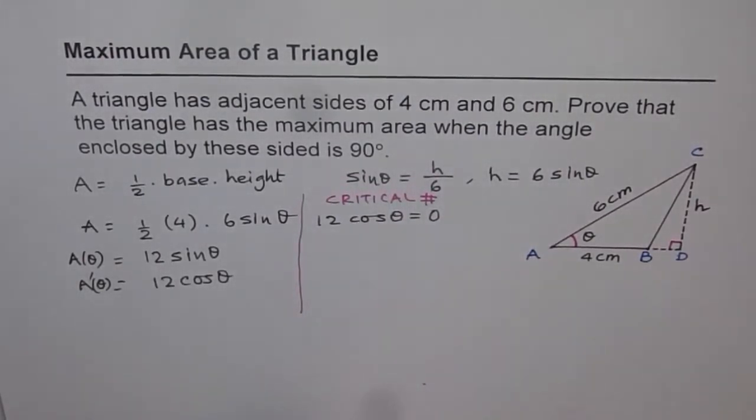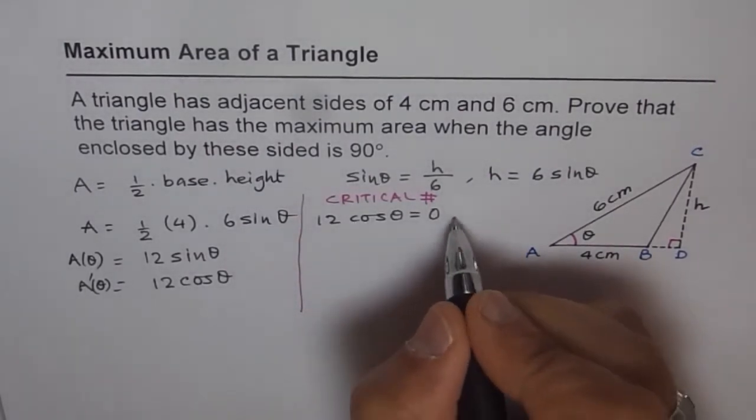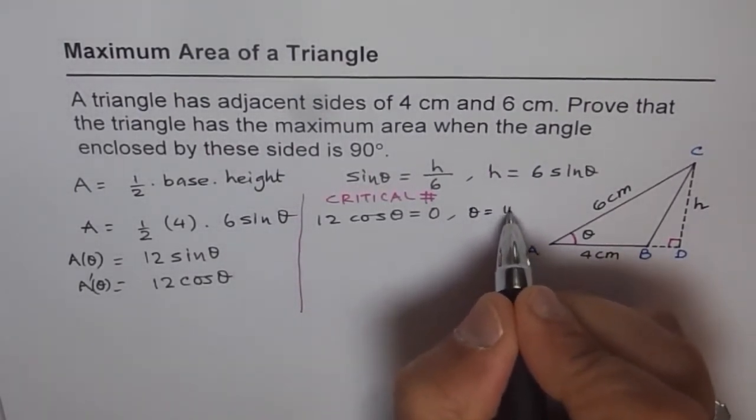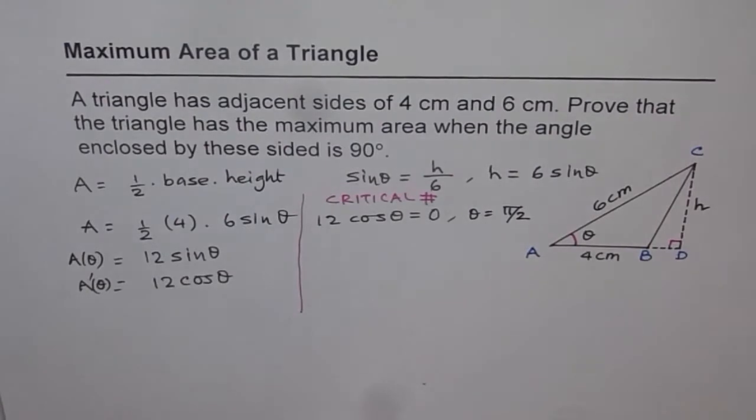Now when is cos theta 0? Cos theta is 0 for theta equals to pi by 2. So that is the angle at which theta could be 0. So that becomes our critical point.